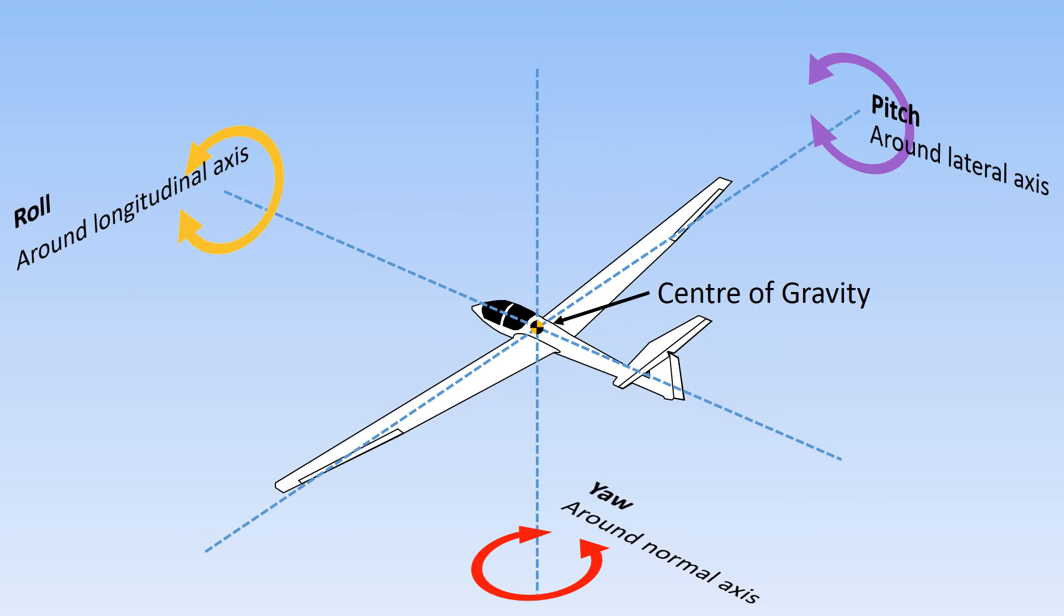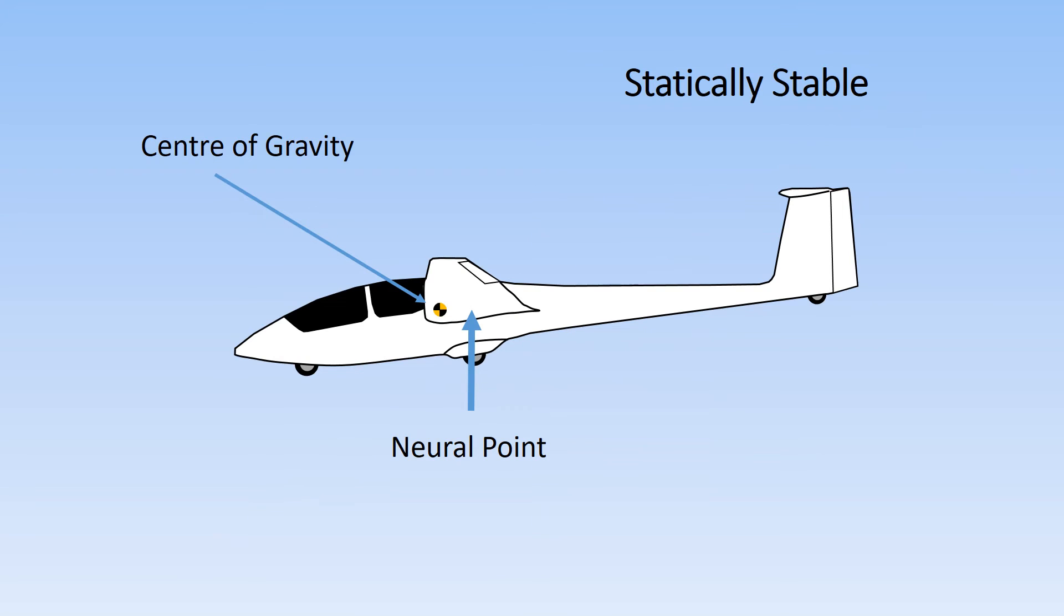You will remember the three axes of the glider from exercise five. Pitch stability concerns rotation around the lateral axis and thus speed control. The glider is statically stable in pitch if the centre of gravity is in front of the neutral point. A stable glider will maintain a constant speed and return to that speed after a disturbance such as a gust of wind.